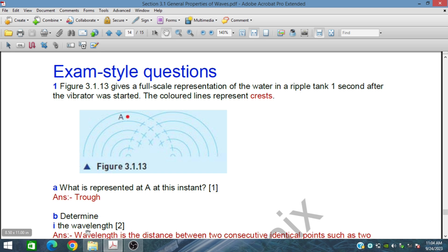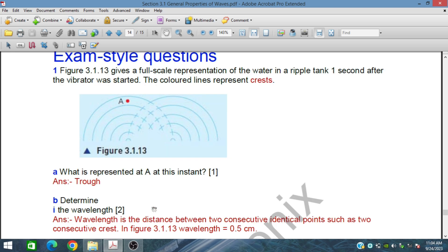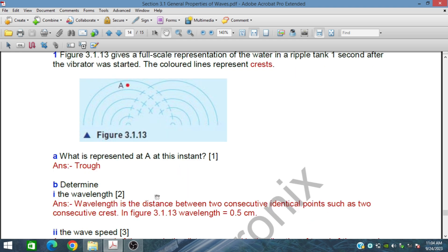In part B, determine the wavelength. Wavelength is the distance between two crests. Here we can see that the distance between two consecutive identical points such as two consecutive crests is 0.5 centimeters. The difference between the two crests anywhere is 0.5 centimeter, so the wavelength is 0.5 centimeter.